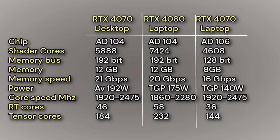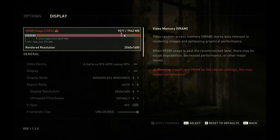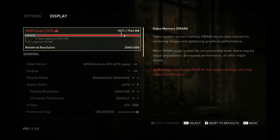The desktop 4070 and the laptop 4080 are both based on the AD104 chip and have 12 gigabytes of GDDR6 video memory, whilst the laptop 4070 is based on the AD106 chip and only has 8 gigabytes. In some games at the common QHD resolution used by higher-end gaming laptops, 8 gigabytes isn't enough and forces you to either lower the resolution or lower the quality settings.